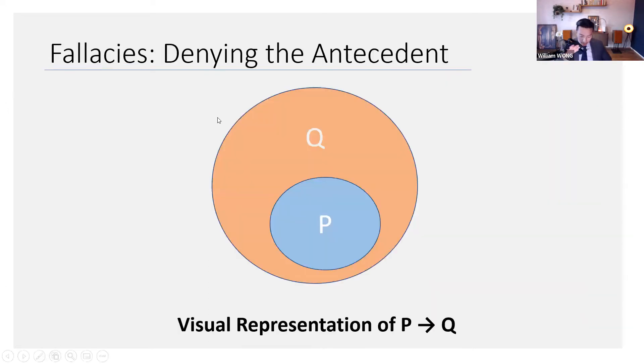All right. So here's another familiar Venn-esque diagram. This is P entails Q. When you're denying the antecedent, you're saying P entails Q as well as not P. Now we can use this diagram to illustrate the fallacy.